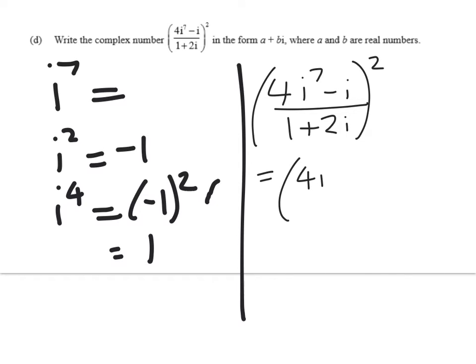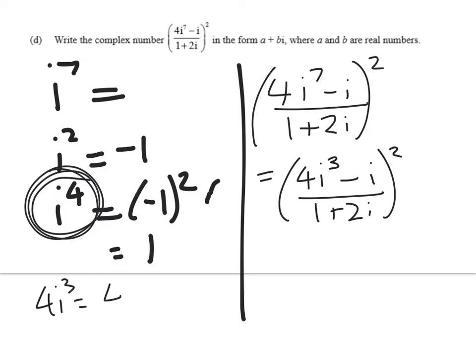Doing this in baby steps, 4i to the power of 7 is the same as 4i to the power of 3. We can take out powers of 4 because they just equal 1. Now 4i cubed is equal to 4i squared times i. We know that this is equal to negative 1. So this thing here is really just negative 4i minus i. We've simplified that quite a long way already.